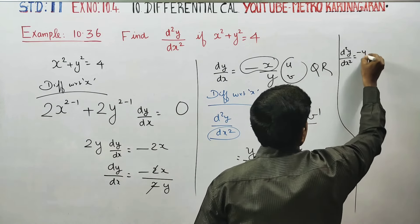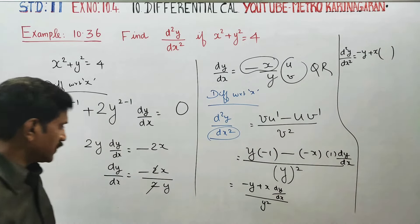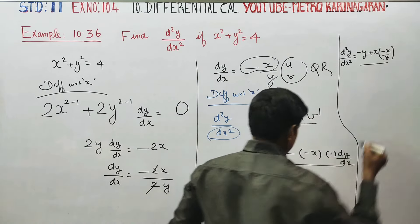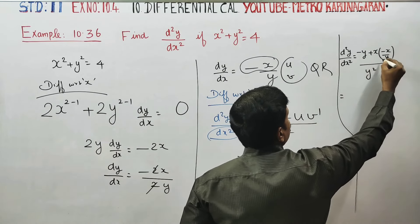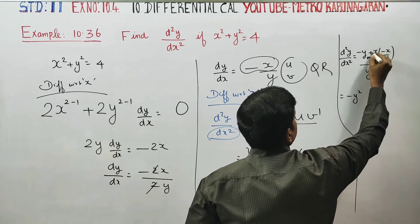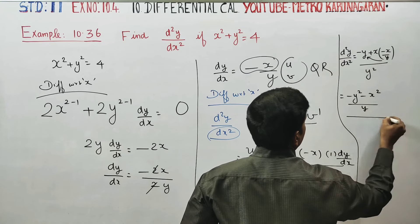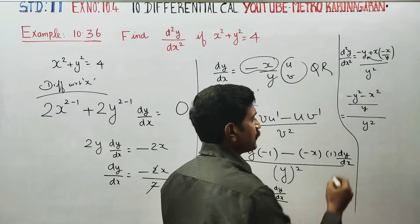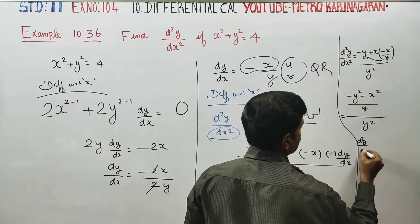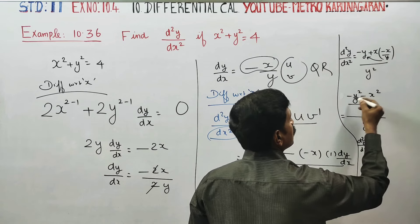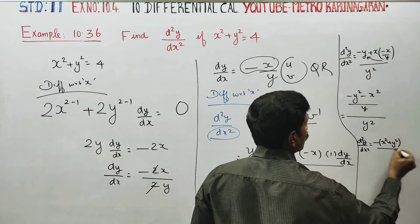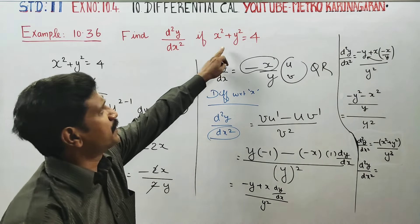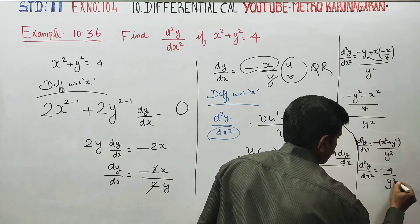This gives (-y + x·dy/dx) / y². Substituting dy/dx = -x/y: (-y + x·(-x/y)) / y² = (-y - x²/y) / y². Cross-multiplying the denominator gives (-y² - x²) / y³, and since x² + y² = 4, the answer is -4/y³.